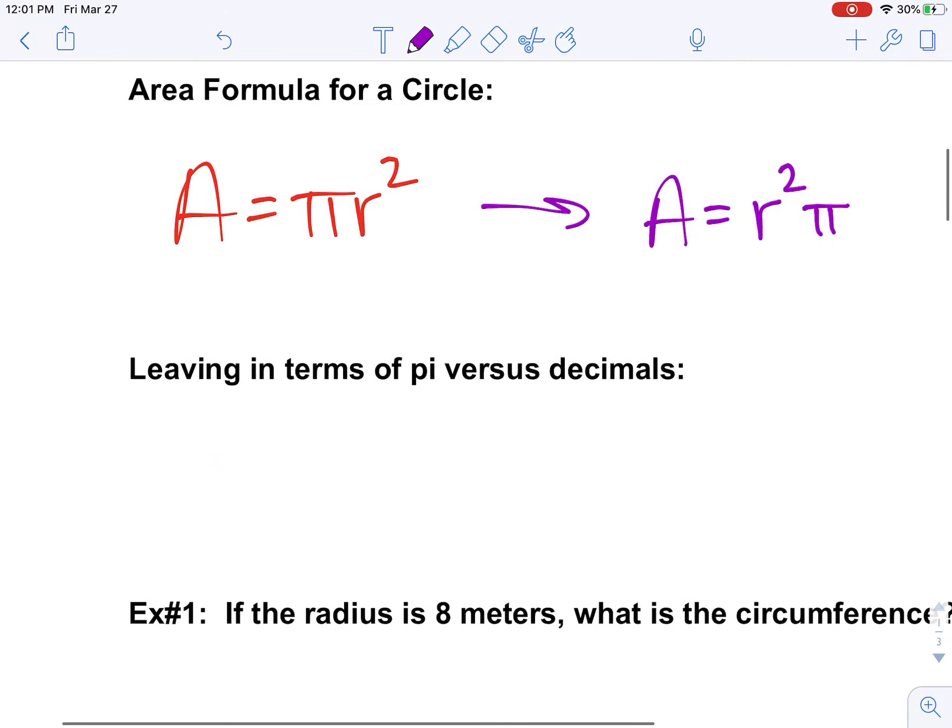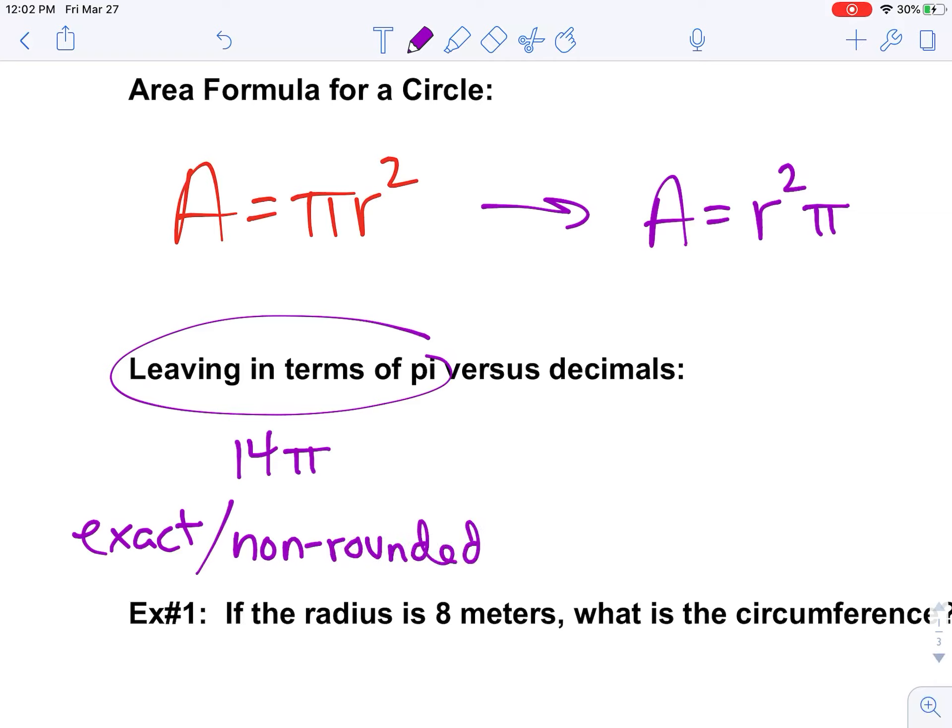So leaving in terms of pi versus decimals. In brief, leaving in terms of pi, it would be like 14π. It is exact. What I mean by that is it's non-rounded. Whereas if I do 14 times 3.1415, it's a rounded answer. Okay, so rounded is a rounded decimal. So if I say leave it in terms of pi on a quiz or a test, that's what they want. If I say give me a decimal to the nearest hundredths, they're assuming you're going to multiply pi into the answer and get an actual decimal.